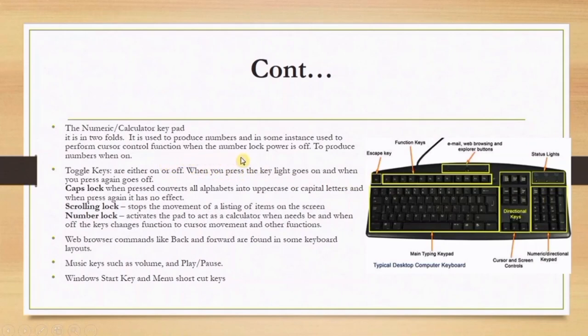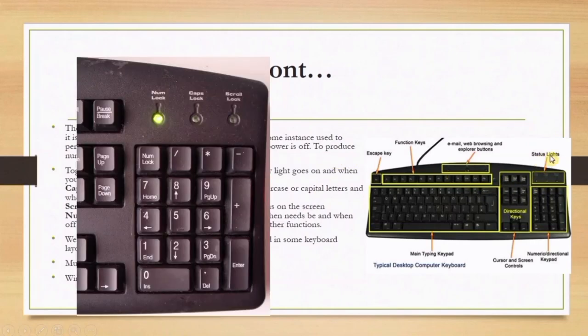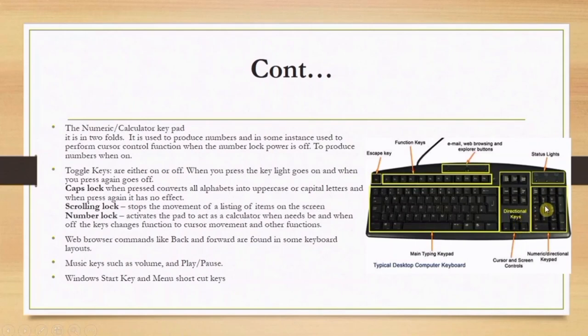When the Num Lock is off — you can check the status lights on the keyboard — the numeric keypad acts as directional keys: 8 is for up, 4 is for left, 6 is for right, and 2 is for down. But when the Num Lock status light is on, the keypad is used for calculations.